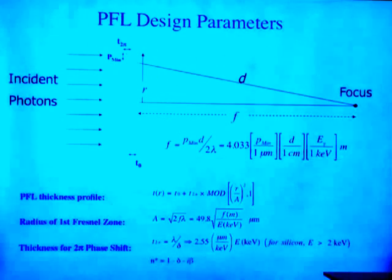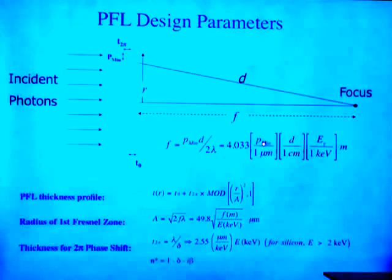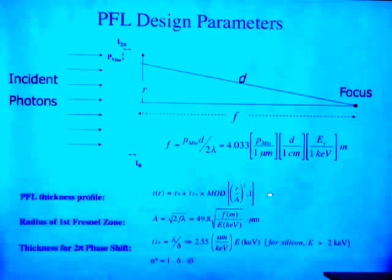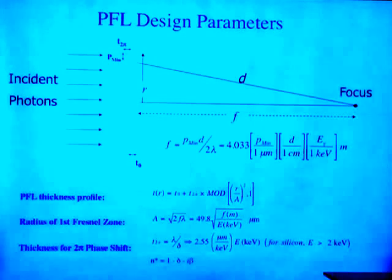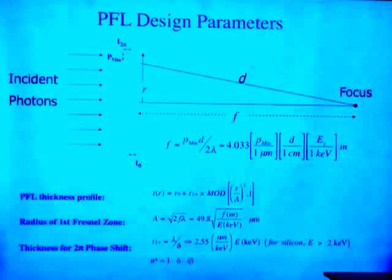I want to go through the design parameters. There's a basic equation that drives everything. If you define p-min as the minimum spacing at the outside of the lens, and there's a certain amount of material needed to change the phase by 2π, with a certain lens radius and focal length — the actual focal length is a linear relationship between p-min, diameter of the lens, and the energy you're working at. The thickness profile resets at every 2π. For silicon, you need 2.55 microns per keV to get a phase change of 2π.